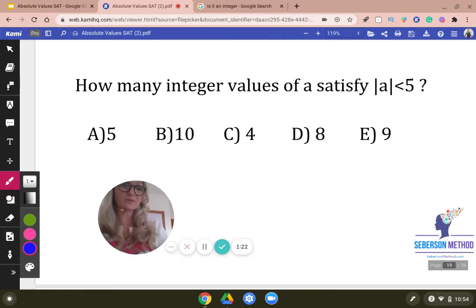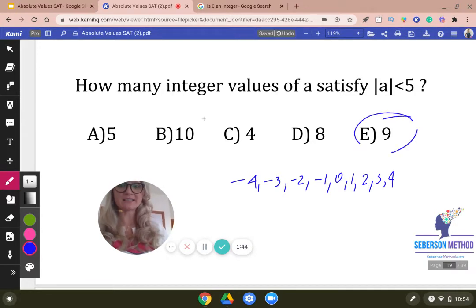So let me give you the whole spiel. So a could be, absolute value of a could be less than five. So it's negative four, negative three, negative two, negative one, zero, one, two, three, four. How many is it together? Nine. The right answer here is nine.